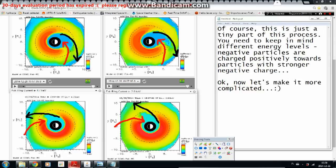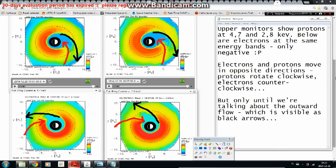Of course, this is just a tiny part of this process. You need to keep in mind different energy levels. Negative particles are charged positively towards particles with stronger negative charge. Okay, now let's make it more complicated. Upper monitors show protons at 4.7 and 2.8 kiloelectronvolts. Below are electrons at the same energy bands, only negative.